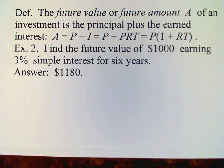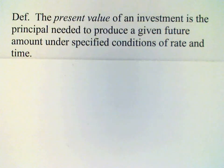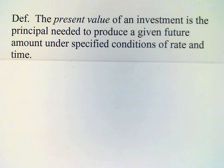Now this formula for the future value can be turned around and solved for the principal. And when this is done, instead of calling it principal, we call it a present value. So the present value of an investment is the principal which is needed to produce a given future amount under specified conditions.